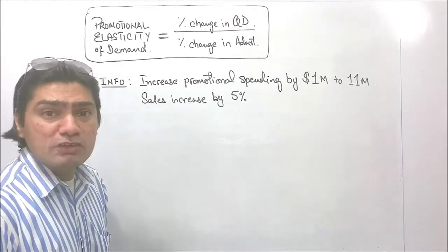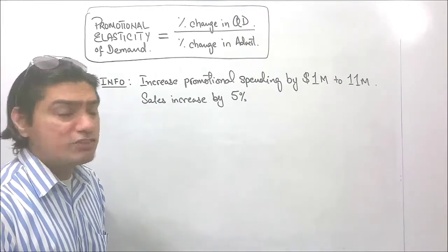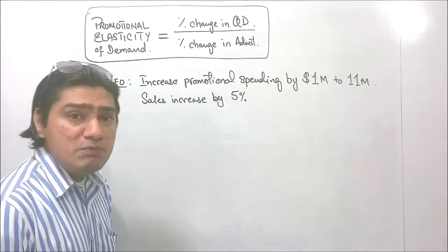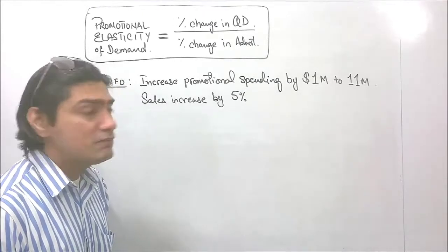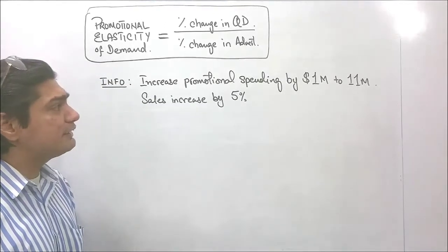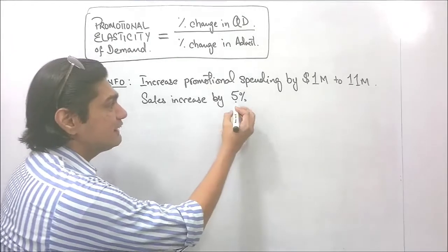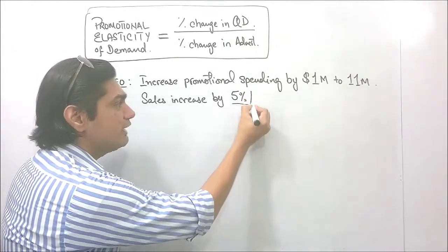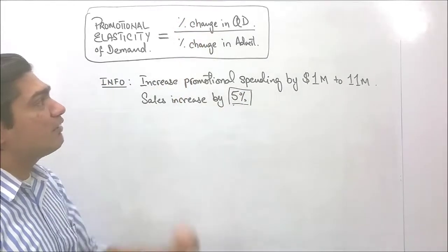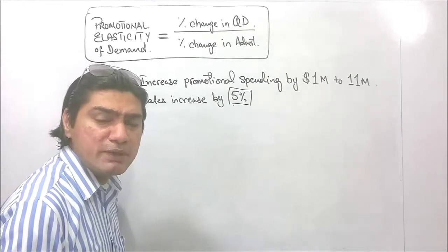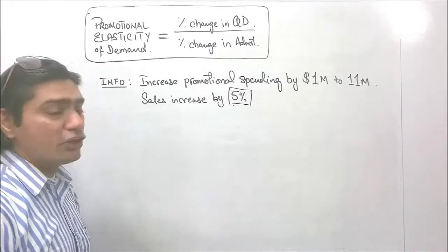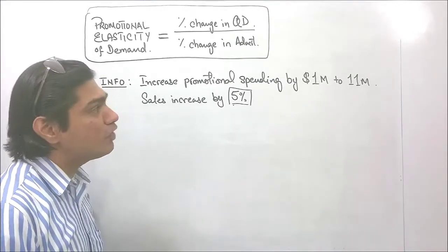In the case given to us, the information relating to this promotional elasticity of demand says: increased promotional spending by 1 million to 11 million, and sales increased by 5%. We can clearly see that the sales increase is already given to us in percentage form. So sales increase will be our percentage change in quantity demanded, because quantity demanded is being reflected by sales.